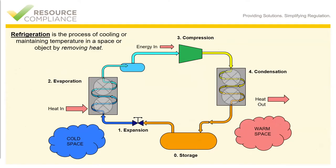Here is our full diagram of the basic refrigeration cycle. Remember, refrigeration is the process of cooling or maintaining temperature in a space or object by removing heat. Notice that in this diagram there are four primary stages: expansion, evaporation, compression, and condensation. Essentially, what is happening in a refrigeration system is we are moving the heat energy from the left side of this diagram — which represents the cold storage room or wine chiller — to the right side of this diagram, which represents the ambient atmosphere outside. And that's how we maintain a temperature.